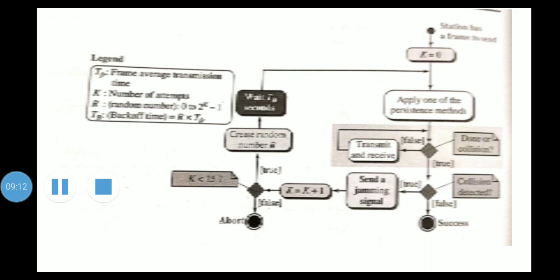In the flow diagram, after applying one of the persistent methods and checking done or collision, if false, the station transmits and receives. This shows that transmission is a continuous process in CSMA/CD.